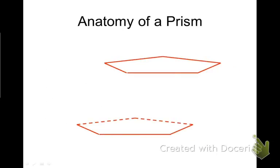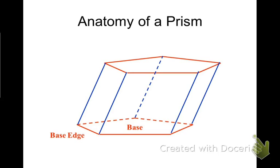What are the parts of a prism? The first parts are the bases. We have two bases in a prism. On the sides, we have the base edge, which is part of the edges of the base, and then we have the lateral edge, which is the line that connects between the bases.